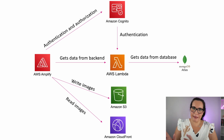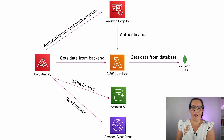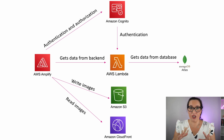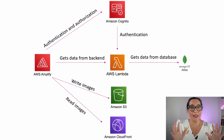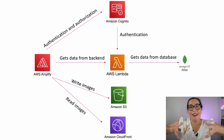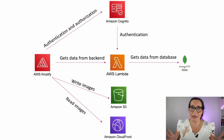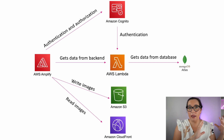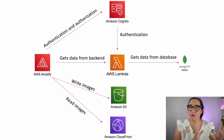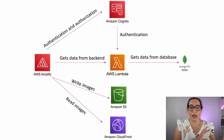Here is a diagram of our application. We have a backend hosted in a Lambda function using an open source component called the Lambda Adapter, which allows you to bring any web application into a Lambda function. Then we have the web part — the React part — it could be any web framework, hosted in Amplify, and that is getting the data from Lambda.